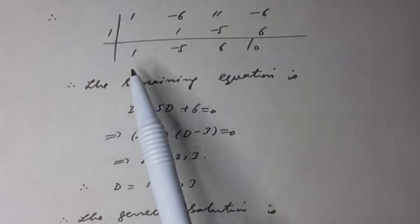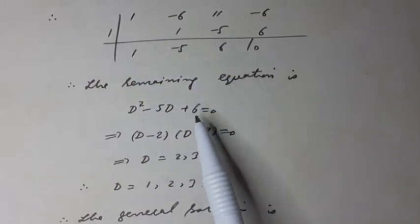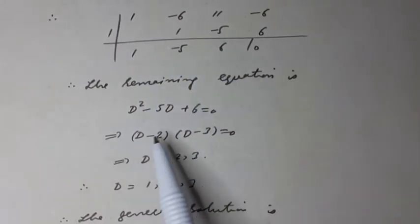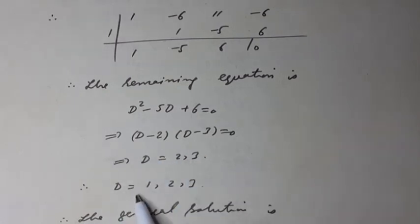Therefore, the remaining depressed equation is D square minus 5D plus 6 is equal to 0. So its factorization is D is equal to 2, 3. Therefore, D is equal to 1, 2, 3.